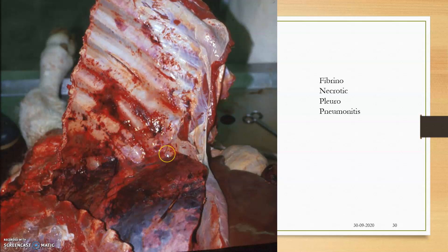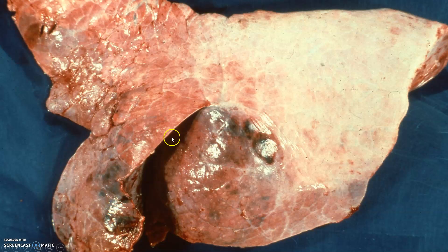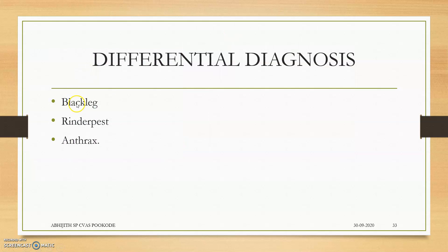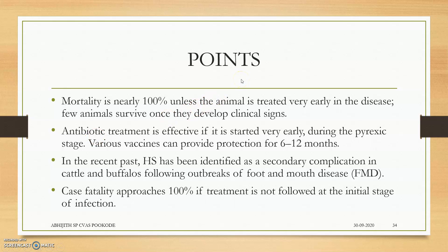For fibro-necrotic pleuropneumonia, the pleural fluid will contain bacteria, producing many lesions in nearby cells. On microscopy, mainly bipolar staining is seen when culturing or bronchial swabs are done. Differential diagnosis is made with blackleg, rinderpest, and anthrax. Key points: mortality is nearly 100% unless the animal is treated very early in the disease, and antibiotic treatment is effective. Treatment must be started during the pyrexia stage. After hemorrhagic septicemia, animals become more susceptible to FMD, as the FMD virus can easily gain entry into cattle already infected with hemorrhagic septicemia.